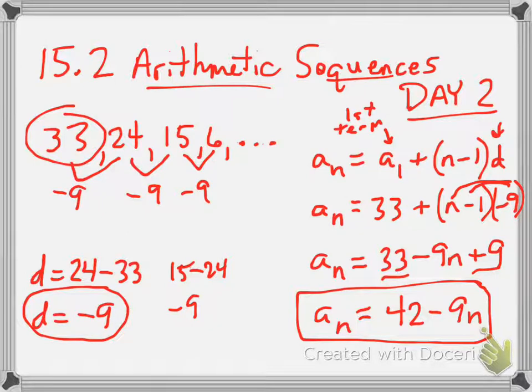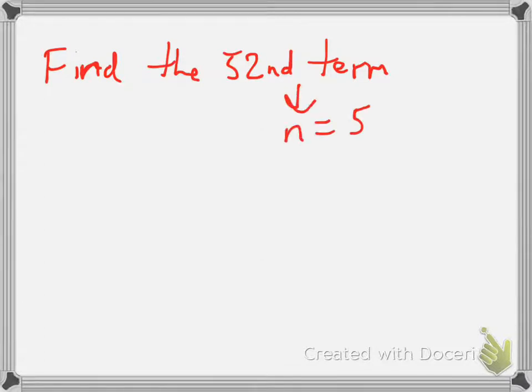So they could ask us to find any term we want in the sequence, and now we can find it using this formula. So for example, they'll say, find the 52nd term. So all that means is n equals 52.